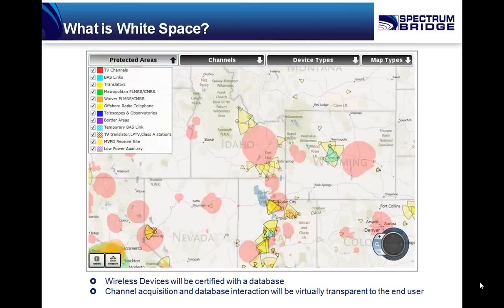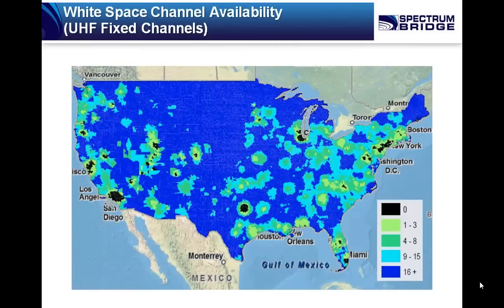Most of that should be transparent to an end user. We're going to talk a little bit later about how the mechanics of deploying a network happens with this new concept. If you roll up the available white space, there's obviously more than a single channel. This next map is a subset of white space that's germane to a lot of the applications and services we're going to talk about today.